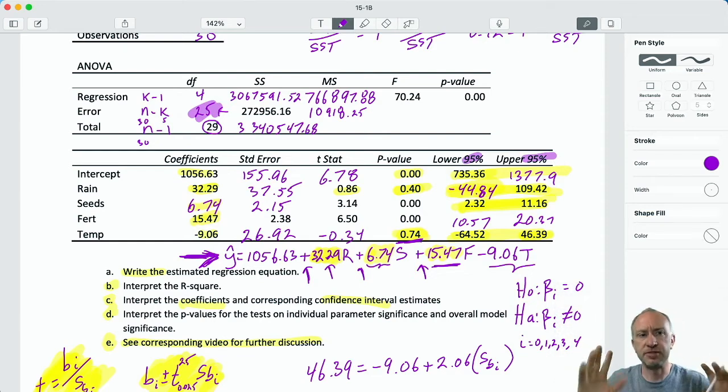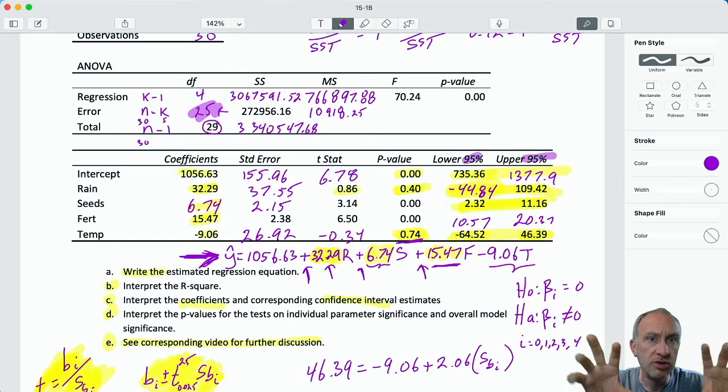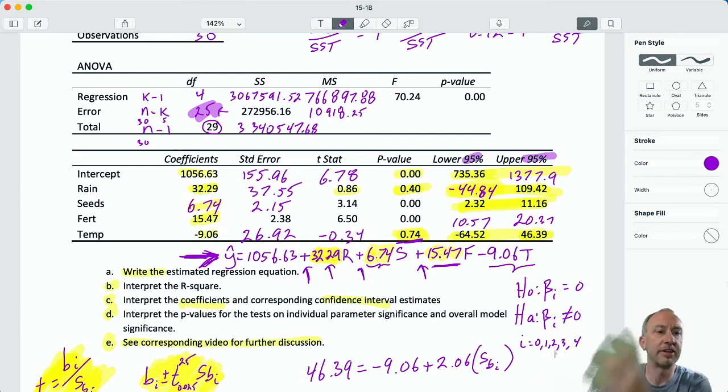Now, again, just to avoid confusing, on an exam, what I would generally do and what is generally accepted would be to group your conclusions into here's the ones that I reject, here's the ones that I do not reject. So, I would say, we have evidence to reject the null hypotheses for the test on seeds and fertilizer, which means, and provide the interpretation that I've just given. I have insufficient evidence to reject the null hypotheses for the coefficient of rain and temperature, and then go on to say what that means, as I've already done. Okay, so you can just lump those, here's the ones that are significant, here's the ones that are not significant.